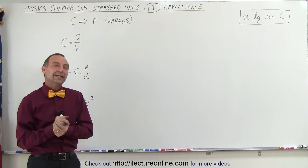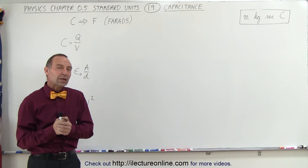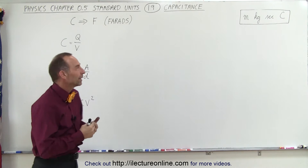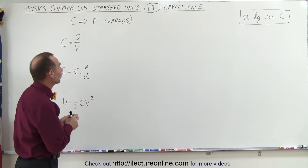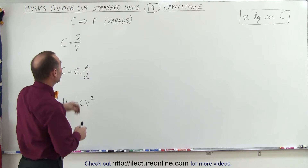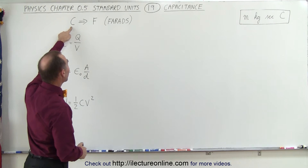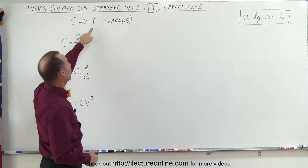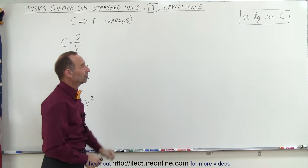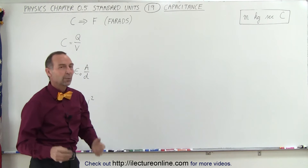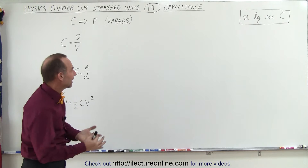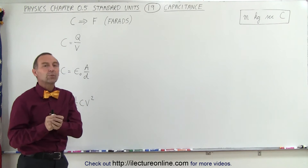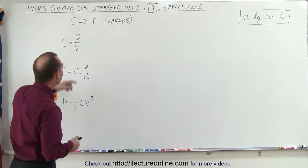Welcome to ElectronLine. Let's take a closer look at capacitance and the units related to capacitance. We use the big letter C for capacitance and the units are F, or Farads. But what is a Farad in basic units? There are two different ways in which we can define capacitance.